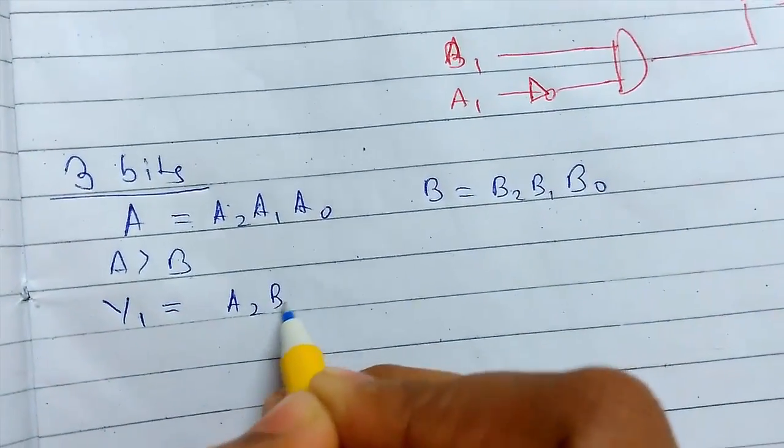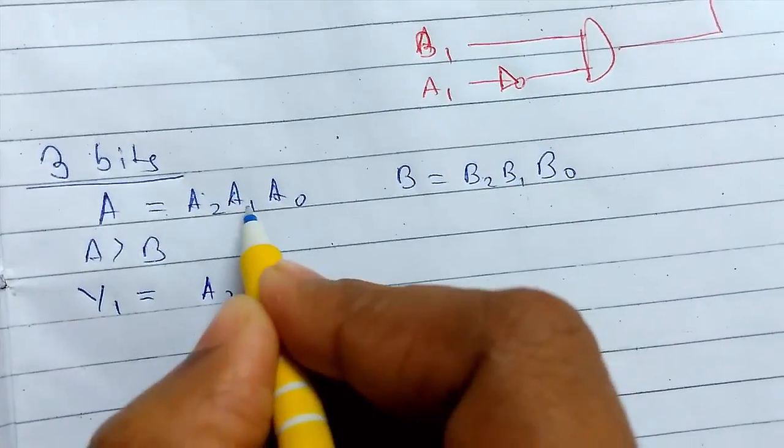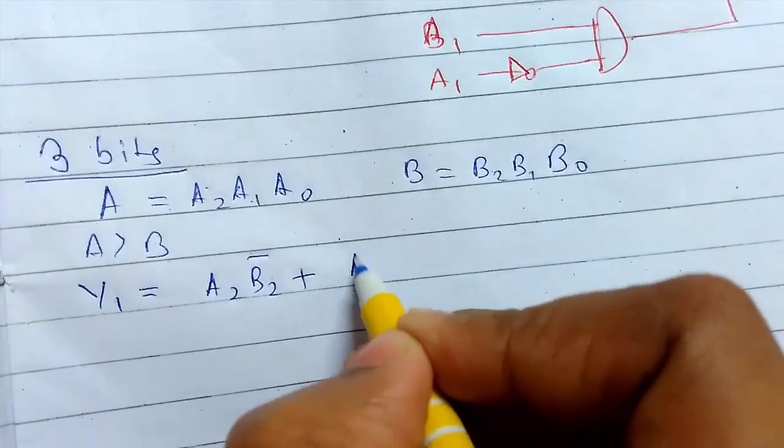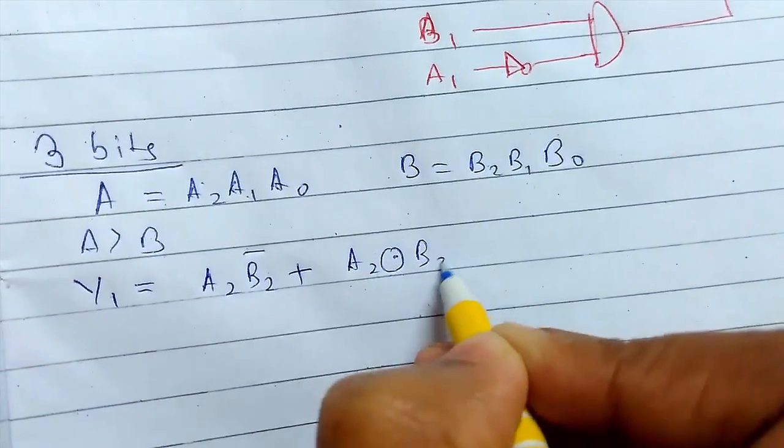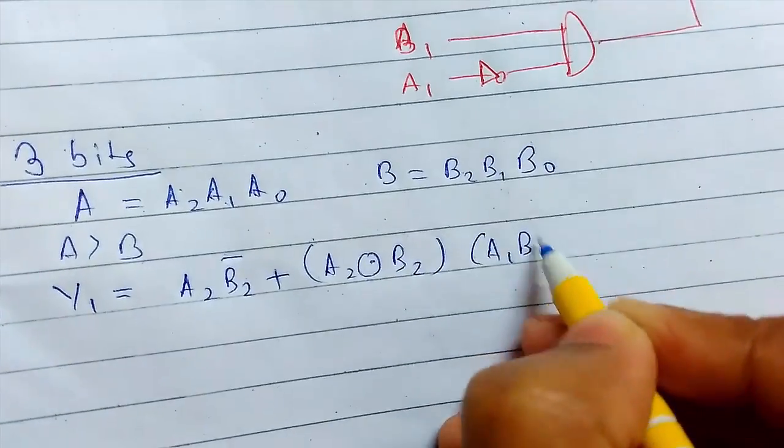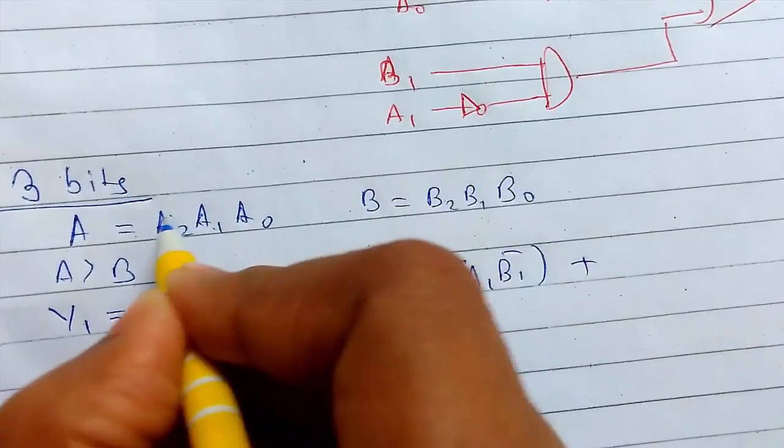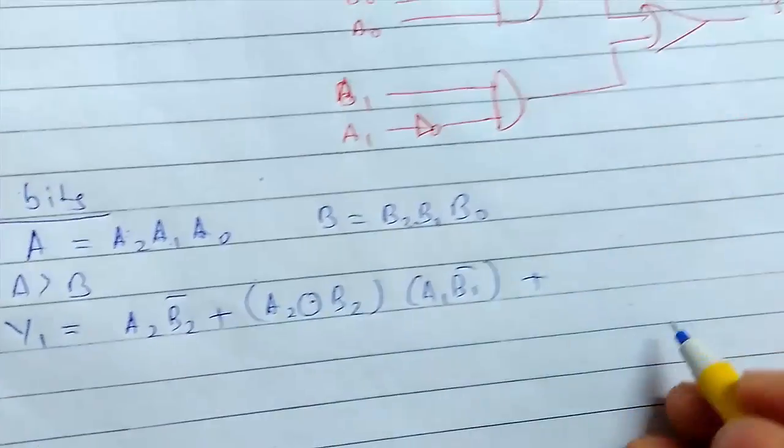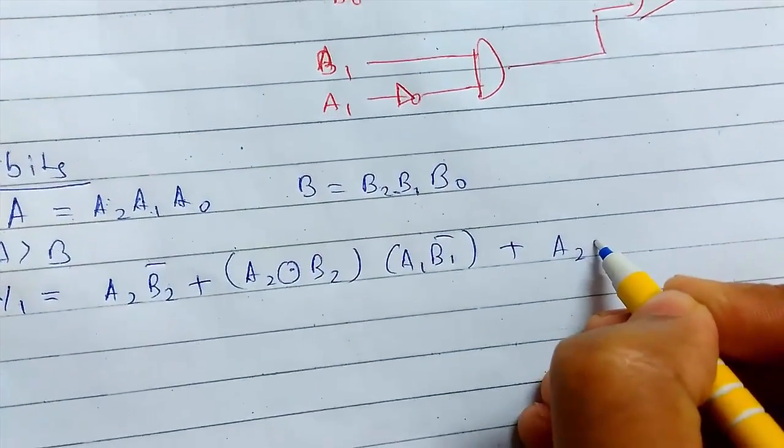Or A1 greater than B1, so first of all the MSB must be same, then A1 B1, or these two can be same and this is greater.